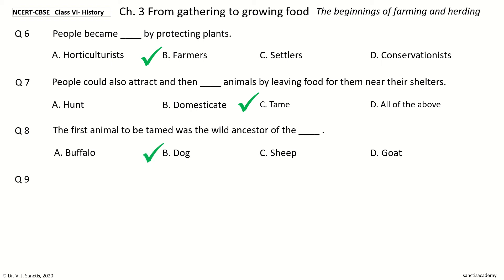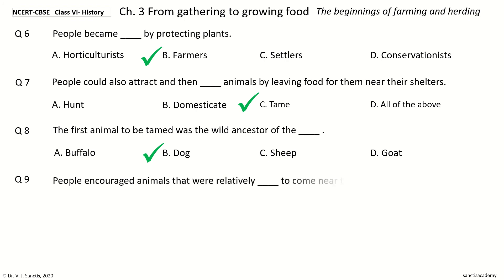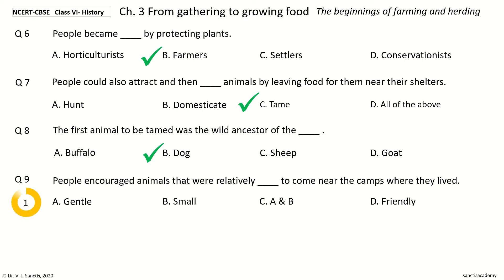Question 9. People encouraged animals that were relatively what to come near the camps where they lived. The options are: gentle; small; A and B; friendly. And the answer is gentle.